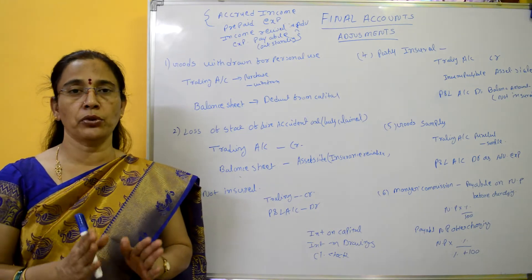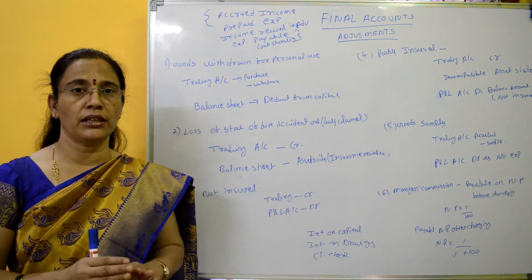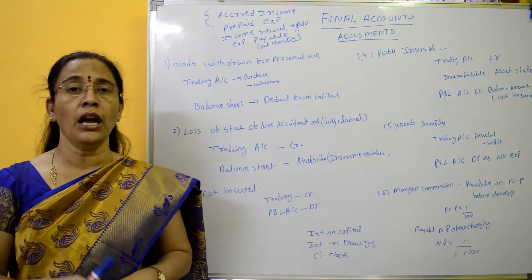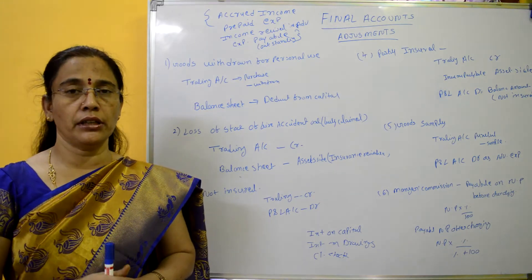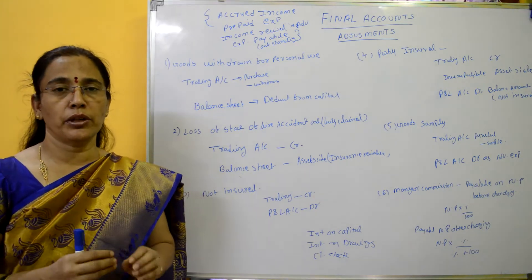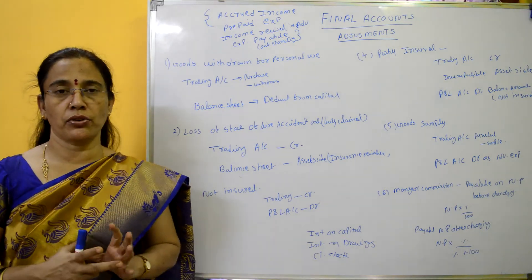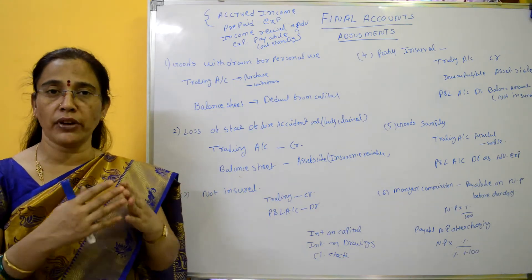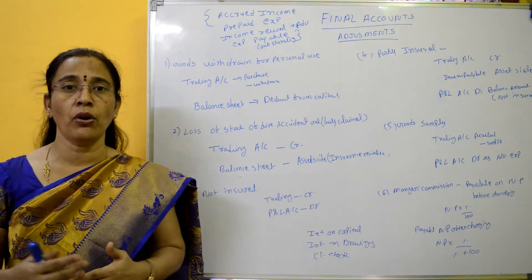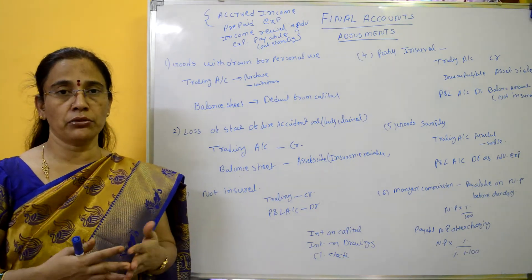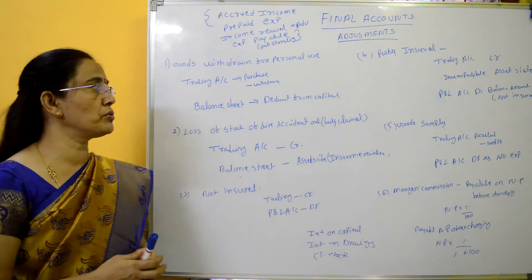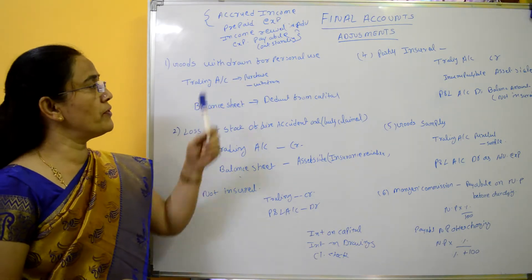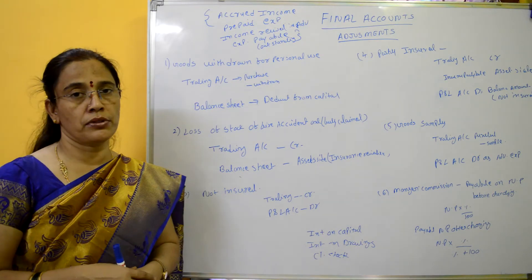We will take the effect of additional information on the financial statements — two financial statements effect. We already have an adjustment. Now, we have an effect on these three financial statements. First: goods withdrawn for personal use.